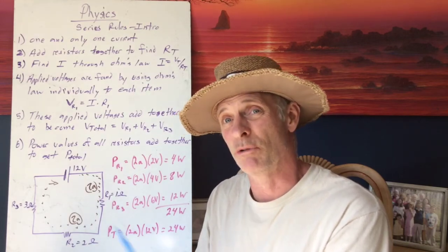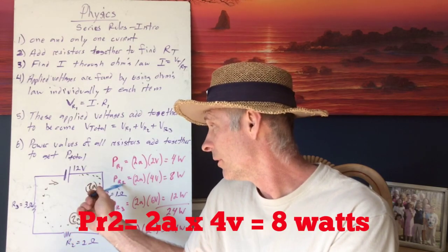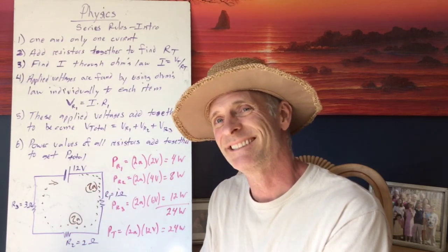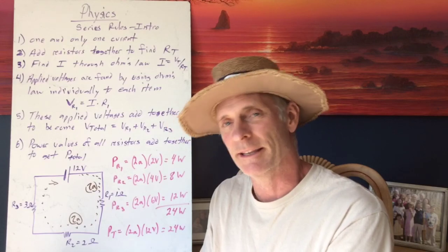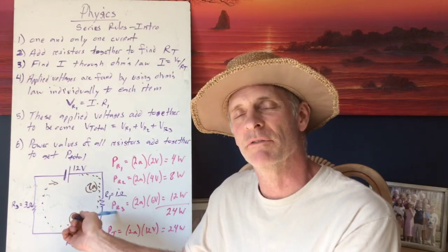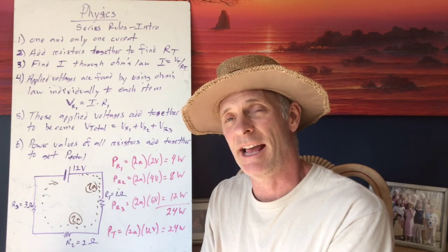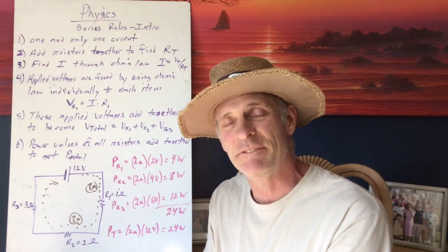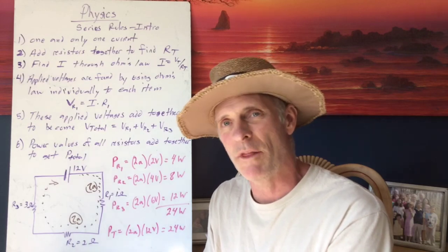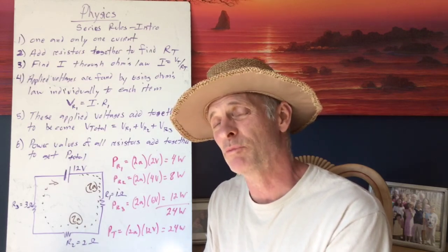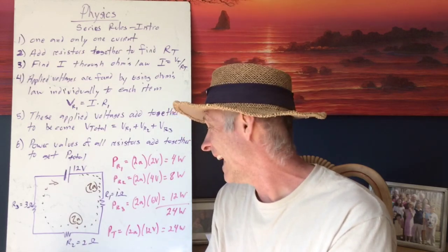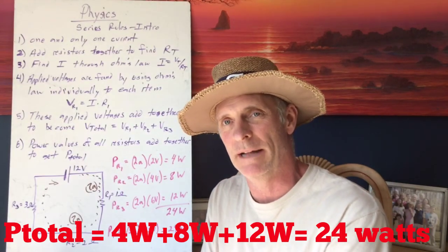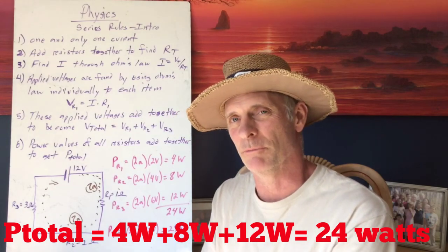Similarly, the power for resistor 2 is 2 amps × 4 volts = 8 watts. For resistor 3, it's 2 amps × 6 volts = 12 watts. Adding all powers together: 4 + 8 + 12 = 24 watts total.